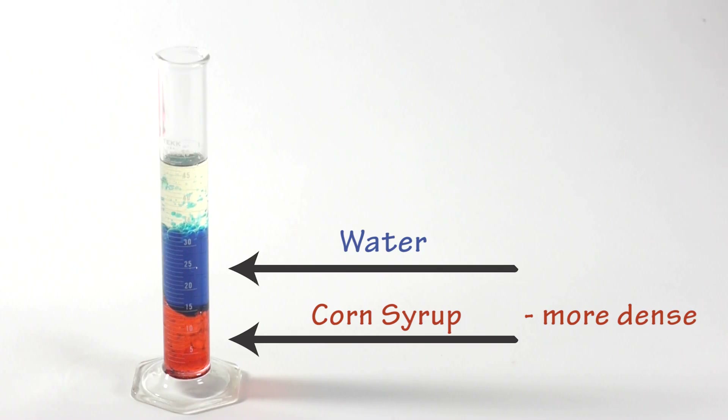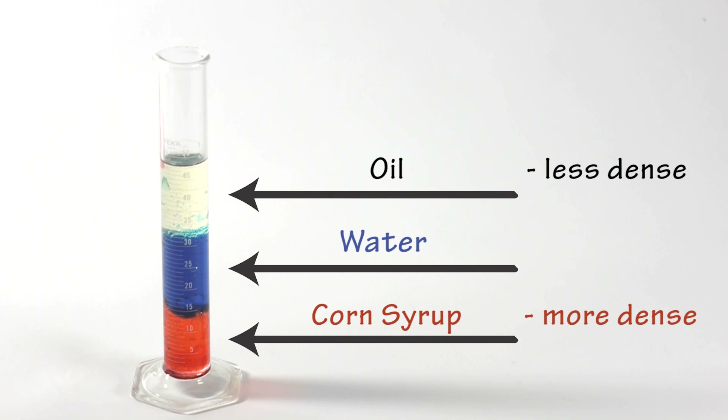We can also determine which liquids will float or sink. Corn syrup is denser than water, so it will sink. Oil is less dense, so it will float.